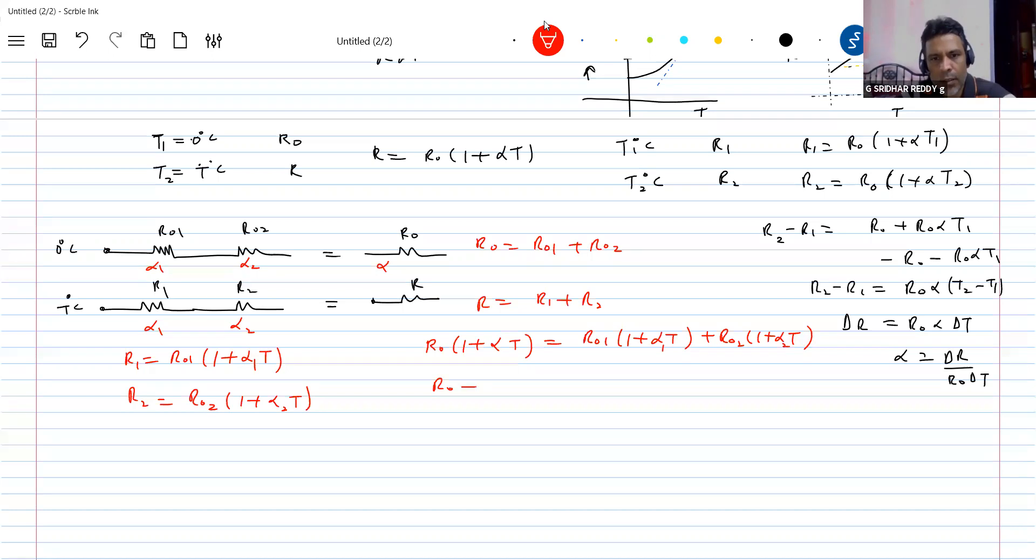So R0 plus R0 alpha T equals R01 plus R01 alpha 1 T plus R02 plus R02 alpha 2 T. R0 equals R01 plus R02, that will cancel out. So we'll end up with R0 alpha equals R01 alpha 1 T plus R02 alpha 2 T.